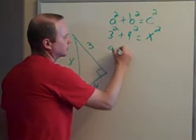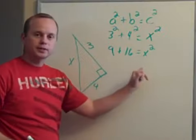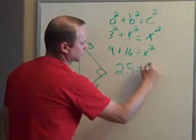Well, 3 squared is 9, plus 4 squared is 16, equals x squared. 9 plus 16 is 25. 25 equals x squared.